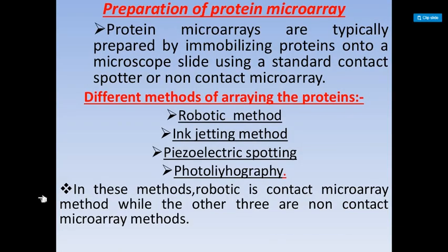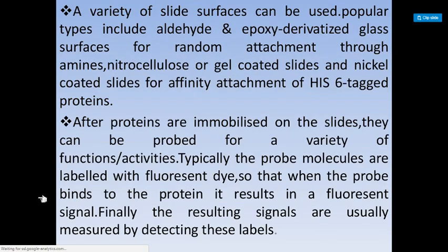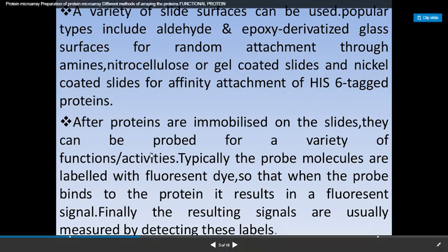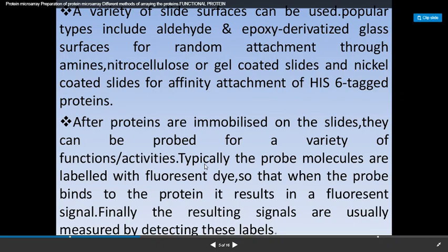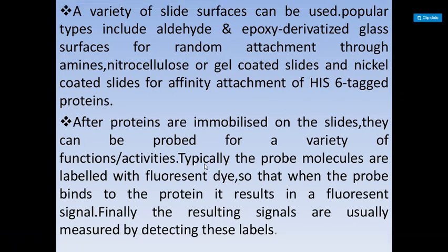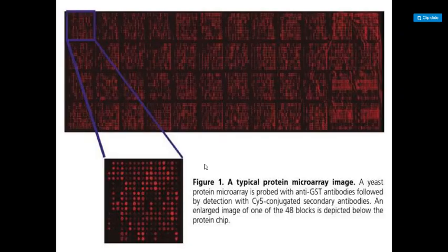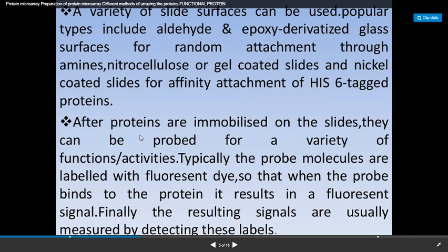A variety of slide surfaces can be used — popularly aldehyde or epoxy derivative glass surfaces for random attachment through amines, nitrocellulose or gel-coated slides, and nickel-coated slides for affinity attachment of His-6 tagged proteins. We also use a probe: when our protein of interest attaches and interacts with another, the probe fluoresces, giving us information that these things are bound — the red signals indicate binding.